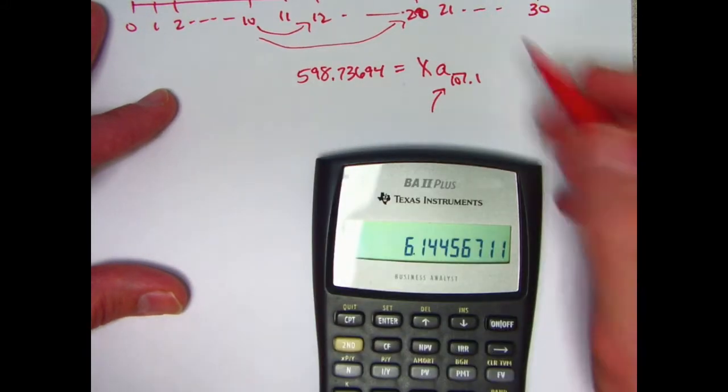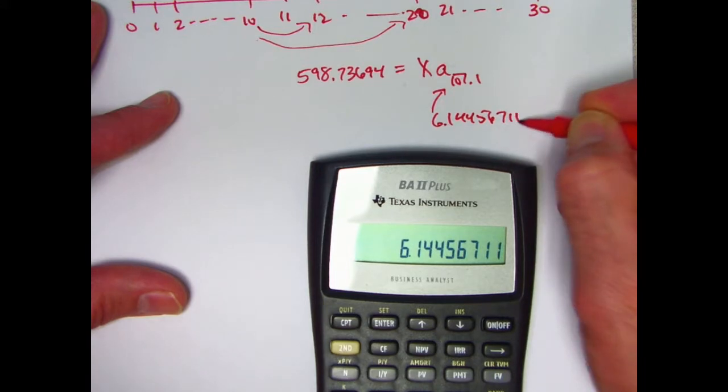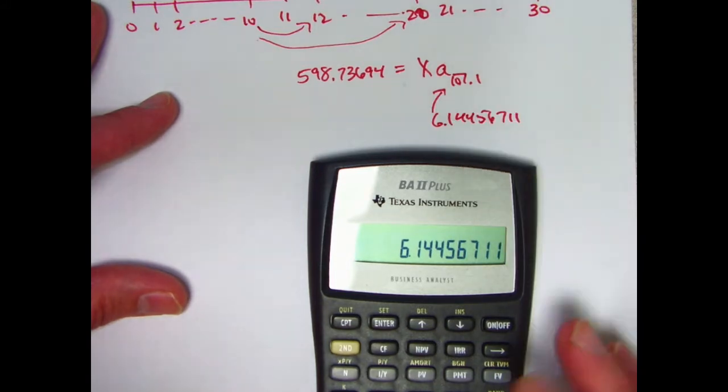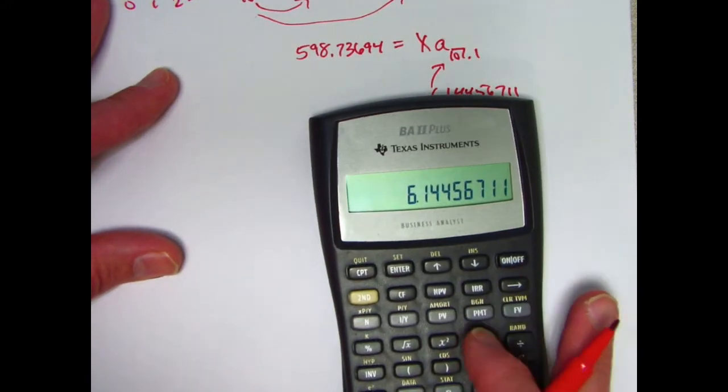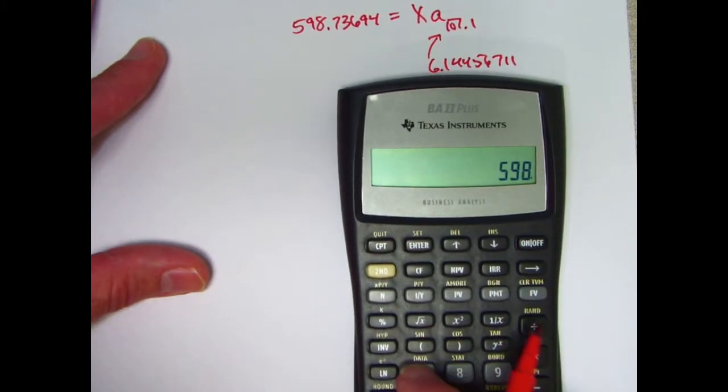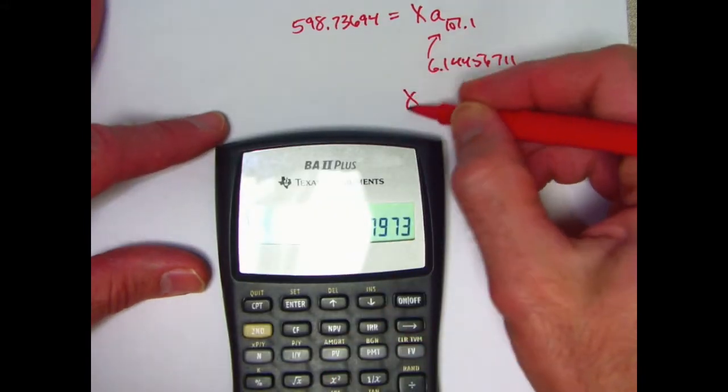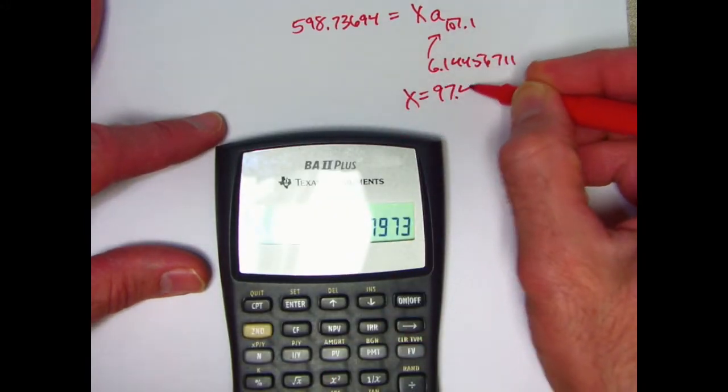This value of A is 6.14456711. Divide both sides by that. Take its reciprocal. And multiply times 598.73694. And you get X to be 97.44.